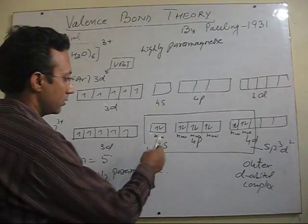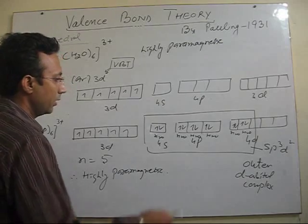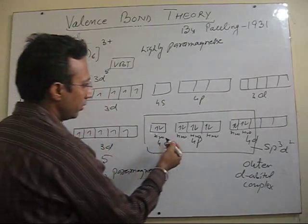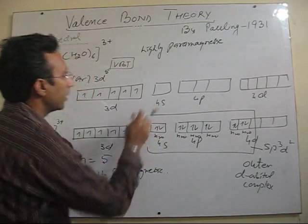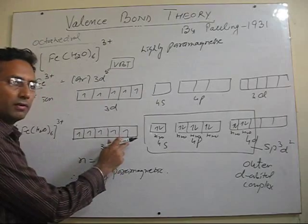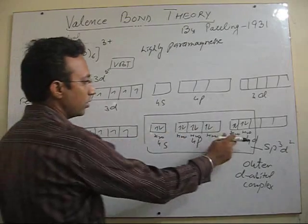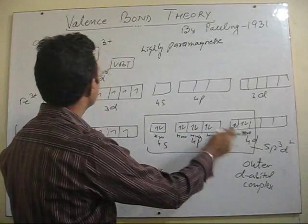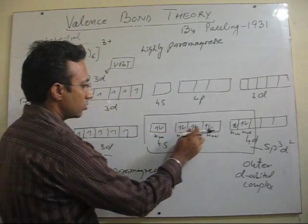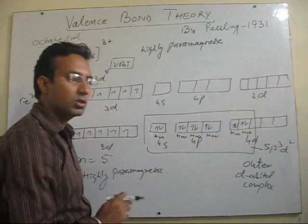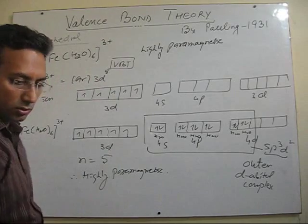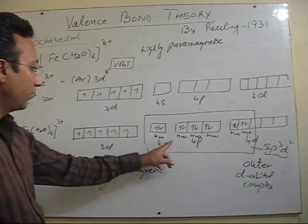Now let's continue the last topic. The last complex we have this. So I have already told you that in this case as it is highly paramagnetic in nature, these five electrons will remain unpaired and outer d orbitals will be used to accommodate six water as a ligand. These six orbitals which are of same energy now due to hybridization are accommodating six water molecules. Water is donating their electrons.